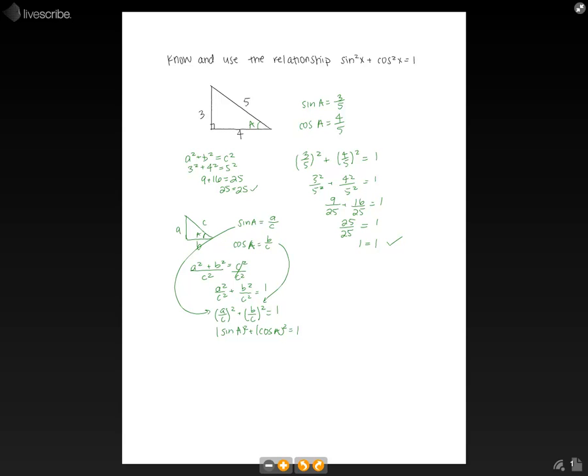So as we can see, sine squared x plus cosine squared x equals 1 is indeed true.